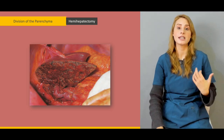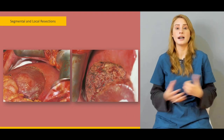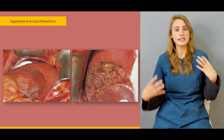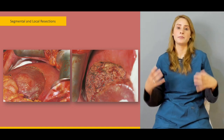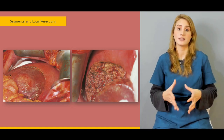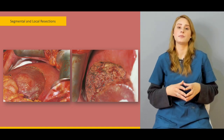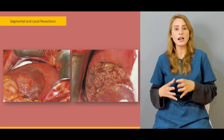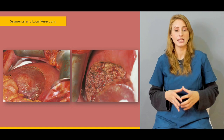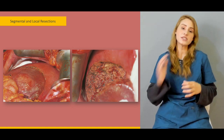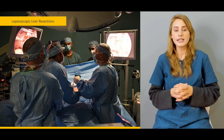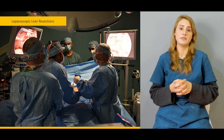Then we'll be talking about the important maneuvers which can be used for the control of bleeding. We'll be talking about different types of resections — resections in the anatomical planes and resections in the non-anatomical planes. Especially in the non-anatomical planes, we'll be talking about wedge resections, right to left hepatectomy, segmentectomy, and lobectomies as well, and in which conditions you need to go for hepatectomy or segmentectomy. Then we'll be talking about laparoscopic liver resections as well.